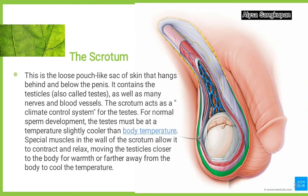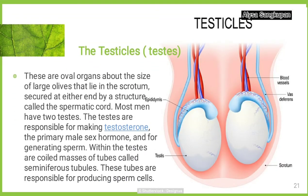Scrotum. This is the loose pouch-like sac of skin that hangs behind and below the penis. It contains the testicles, also called testes, as well as many nerves and blood vessels. For normal sperm development, the testes must be at a temperature slightly cooler than body temperature.